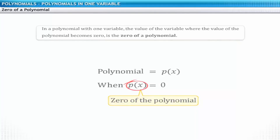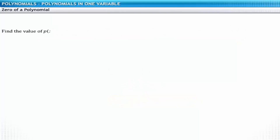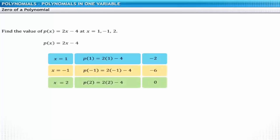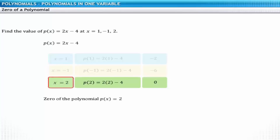Let's take up a problem as an example. Find the values of a linear polynomial p of x equal to 2x minus 4 at x equal to 1, minus 1, and 2. Substituting x with 1, the value of the polynomial is minus 2. The value for x equal to minus 1 and x equal to 2 is minus 6 and 0, respectively. The value of the polynomial is 0 when x is equal to 2. Therefore, 2 is the zero of the polynomial p of x equal to 2x minus 4.